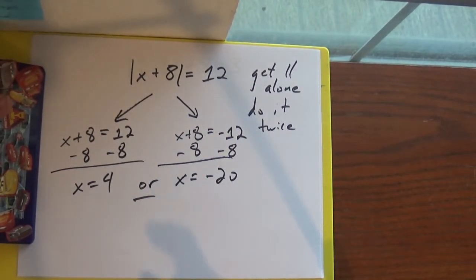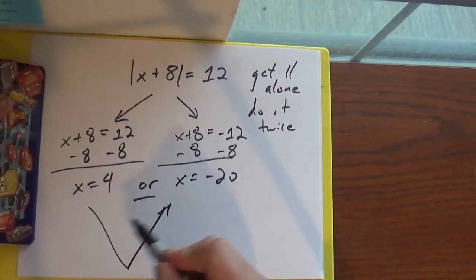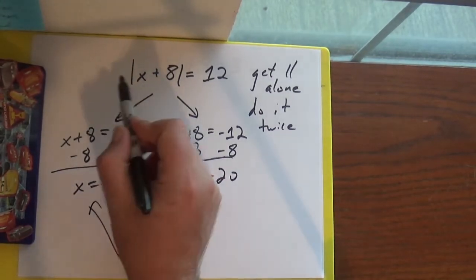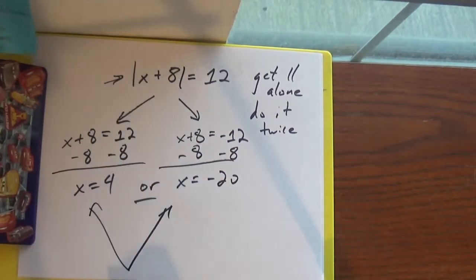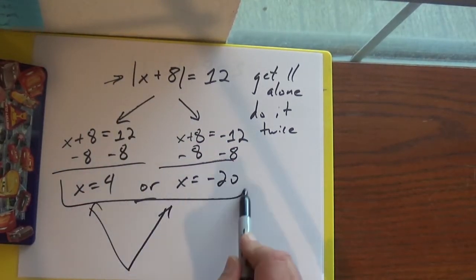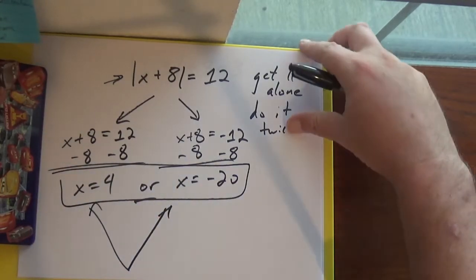...or negative 20. We get two answers because our graph looks like that V-shape — the absolute value either does something or it does nothing. So we end up with two answers. Those are my answers; I get two of them.